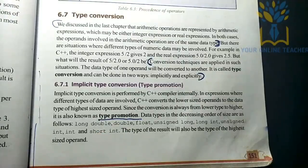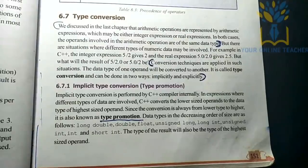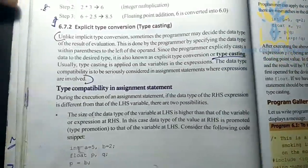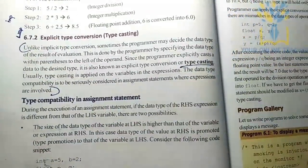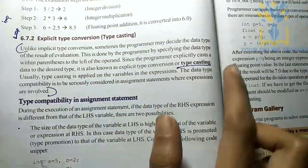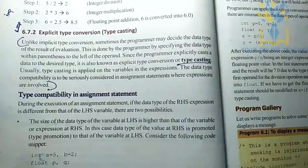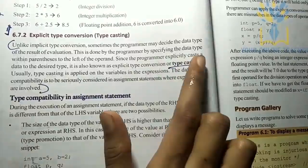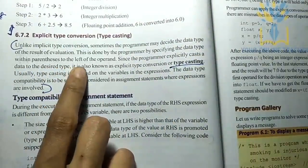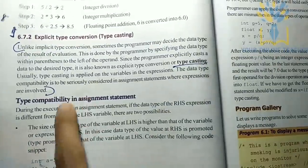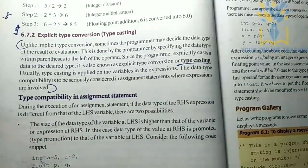Implicit type conversion is automatic — it is type promotion when different data types are involved. At the time of explicit type casting, the programmer decides the data type. Explicit type casting is done by specifying the data type within parentheses to the left of the operand.